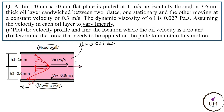Fluid particles in the upper region try to move to the right, while fluid particles near the bottom moving wall try to move to the left. At a certain point, the fluid layer has zero velocity — we want to find that location. First we plot the velocity profile, and then we must find the distance x from the moving plate where oil velocity is zero.